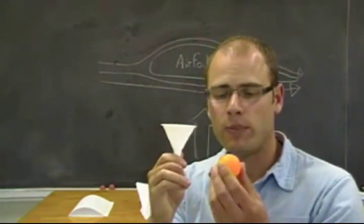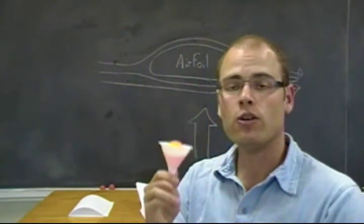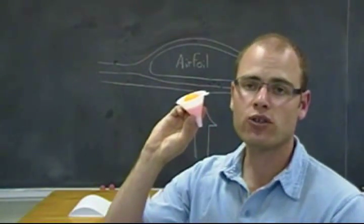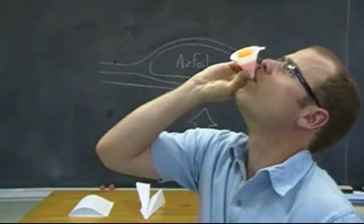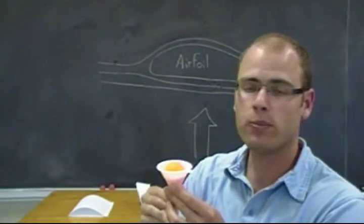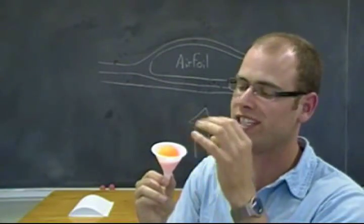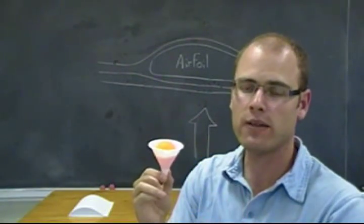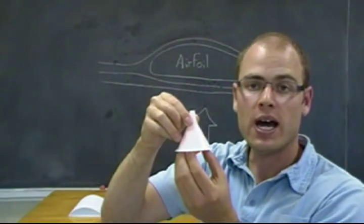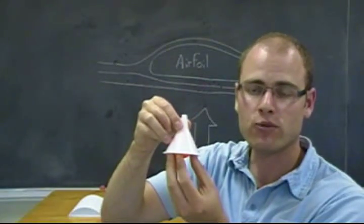Using a funnel and a ping pong ball, you can look at the same principle by challenging students to blow the ping pong ball out of the funnel. No matter how hard they try, they won't be able to, because the fast-moving air creates a zone of low pressure that keeps the ball inside. You can also do the inverse by asking them to see if they can keep the ping pong ball inside the funnel held upside down — let them try and see.